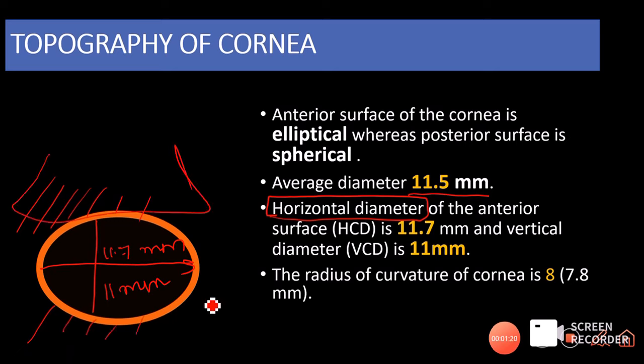Because of the constant vertical force applied by our lids on the anterior surface of the cornea, it is horizontally oval or elliptical. That is also the reason why in with-the-rule astigmatism the vertical meridian is more convex compared to the horizontal meridian.